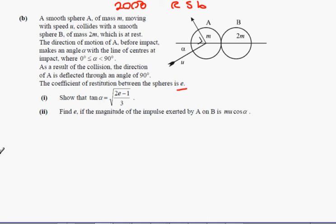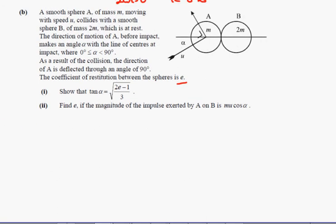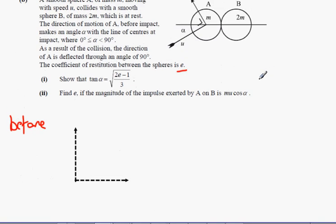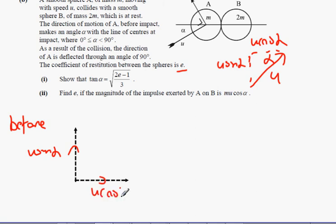Once again, I'm going to break up the components of before and after. So what we have here is before and after. That's before for A. B is not moving, so it doesn't have any components. So this is before, and this one here can be after. Now, before the collision, it's moving up with speed U. We break it up into components, it's going to be U cos alpha and U sine alpha. So U sine alpha going upwards, and U cos alpha going to the right.